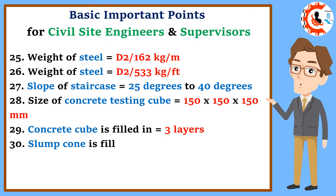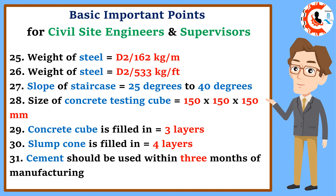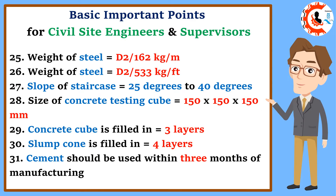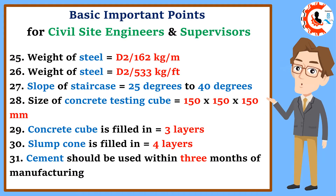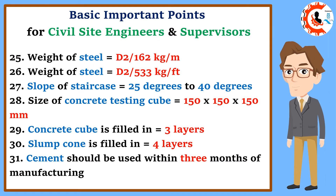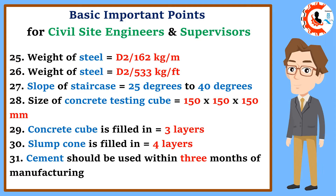25. Weight of steel equals diameter squared divided by 162 kilograms per meter. 26. Weight of steel equals diameter squared divided by 533 kilograms per feet. 27. Slope of staircase equals 25 degrees to 40 degrees. 28. Size of concrete testing cube equals 150 × 150 × 150 millimeters.